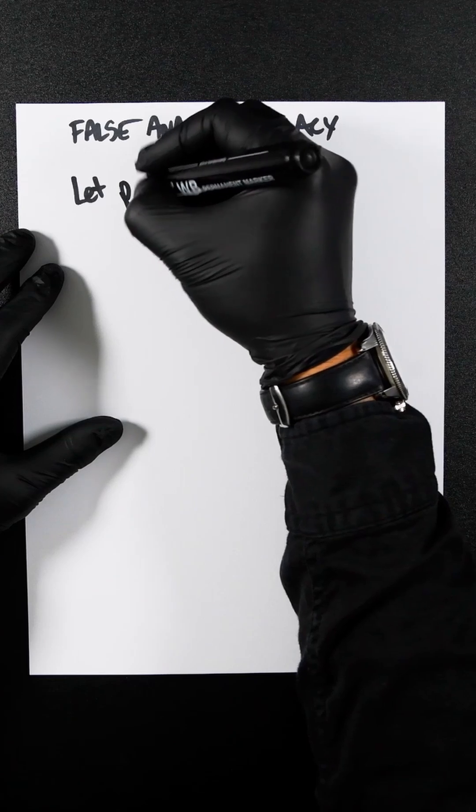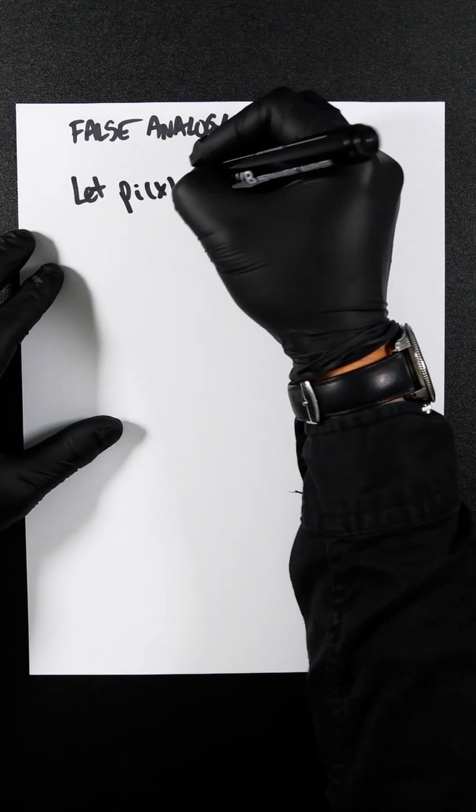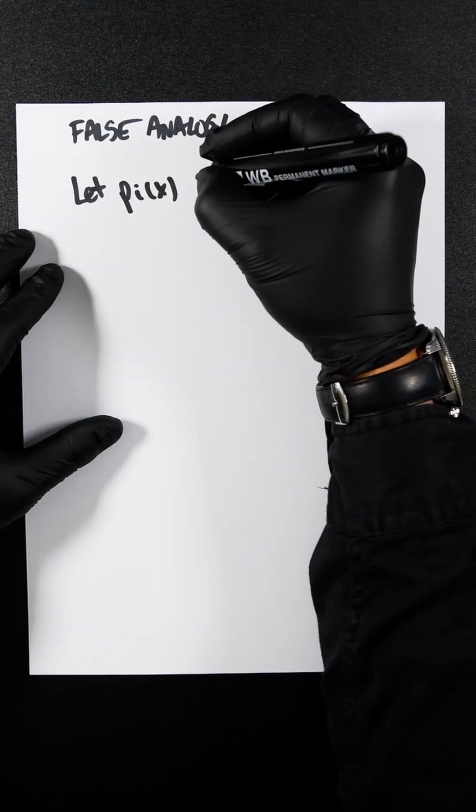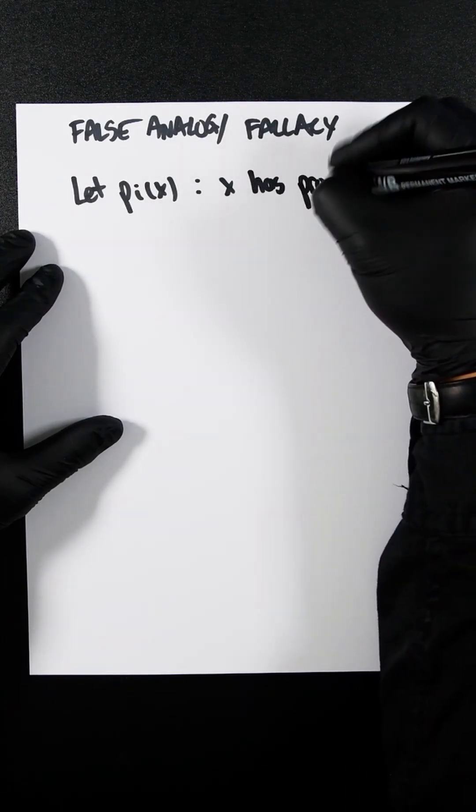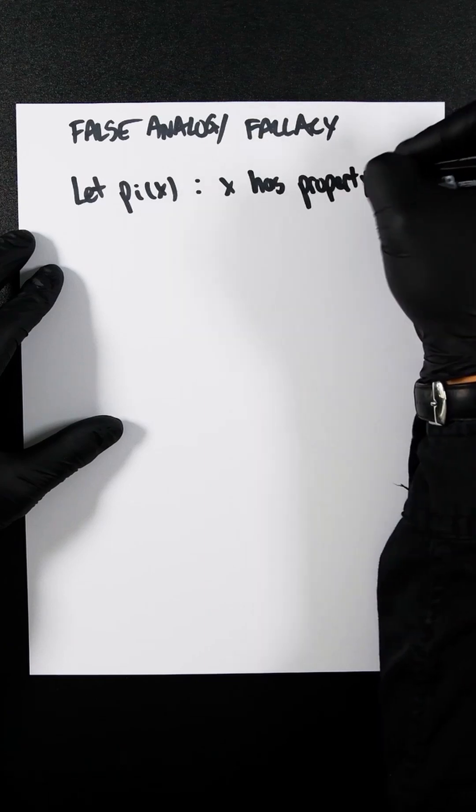So let P(I), where I is the interchangeable number or the analogy, mean that X has property I.